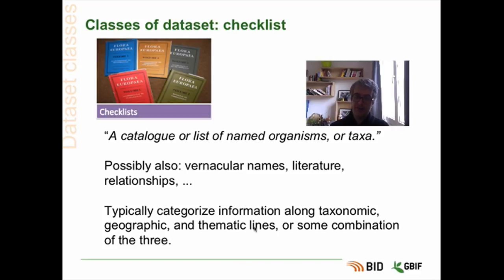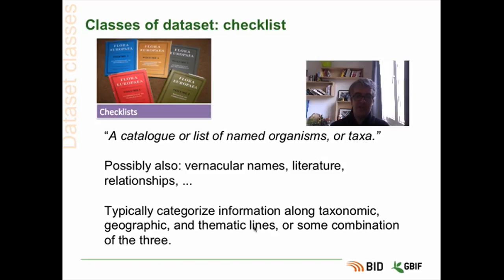We can take an example. If we have a dataset that catalogues the red list mollusks of the Seychelles, it has distinct elements of taxonomy because we are describing a mollusk, aspects of geography because it's the Seychelles, and a theme — it's a species considered endangered by IUCN experts.